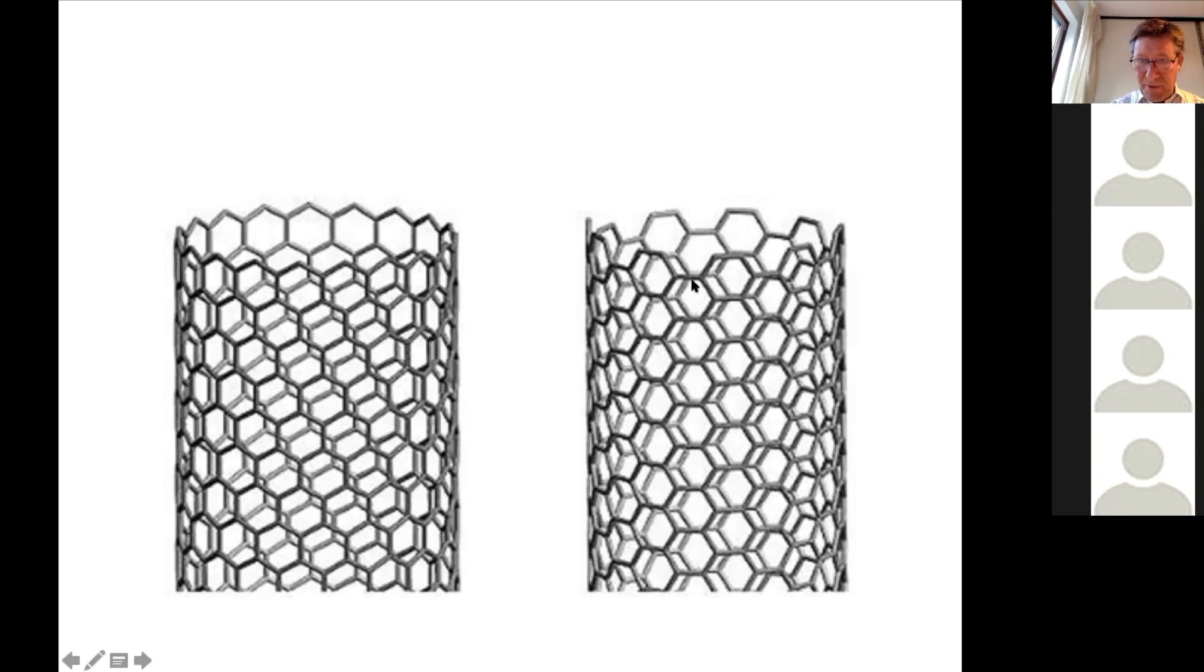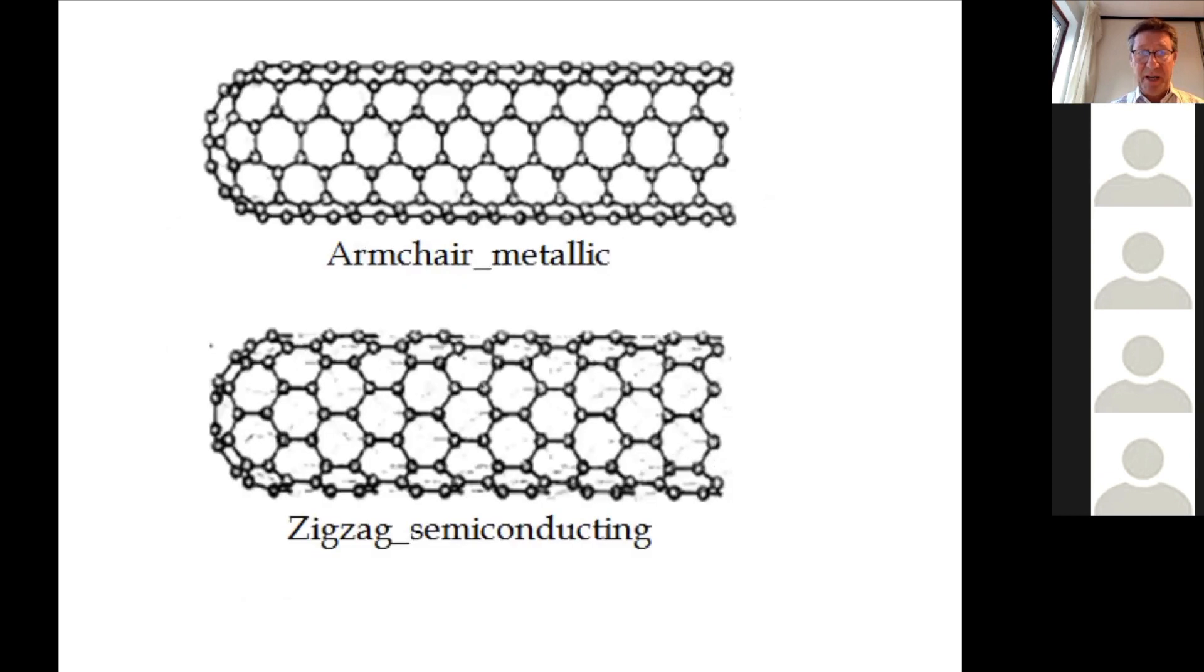All these rings are in the axis of the tube, but here they are in a different direction. Carbon nanotubes can consist of metallic types and semiconductor types. So here you see metallic has this shape. They call it armchair, and the zigzag configuration is semiconducting.